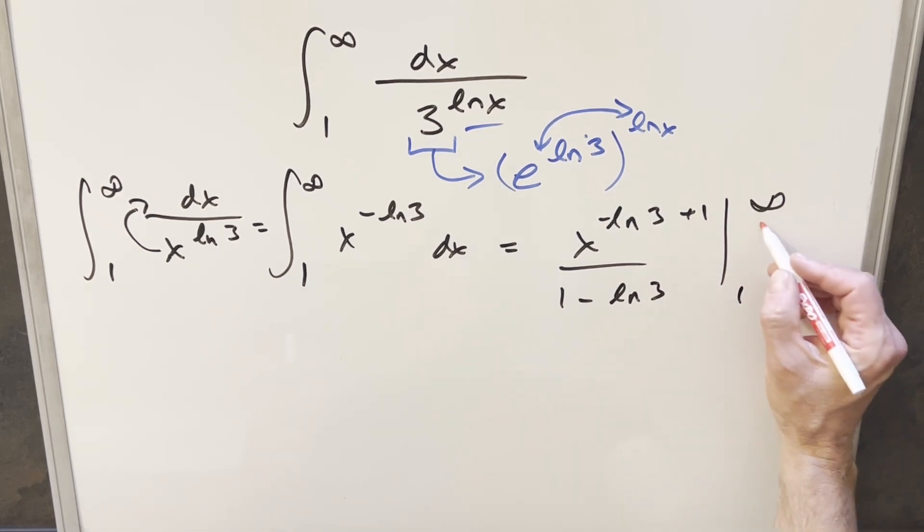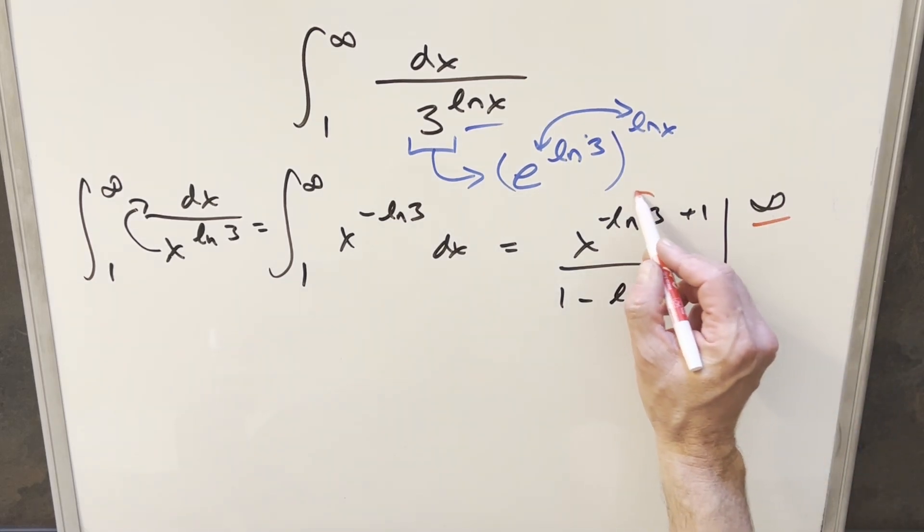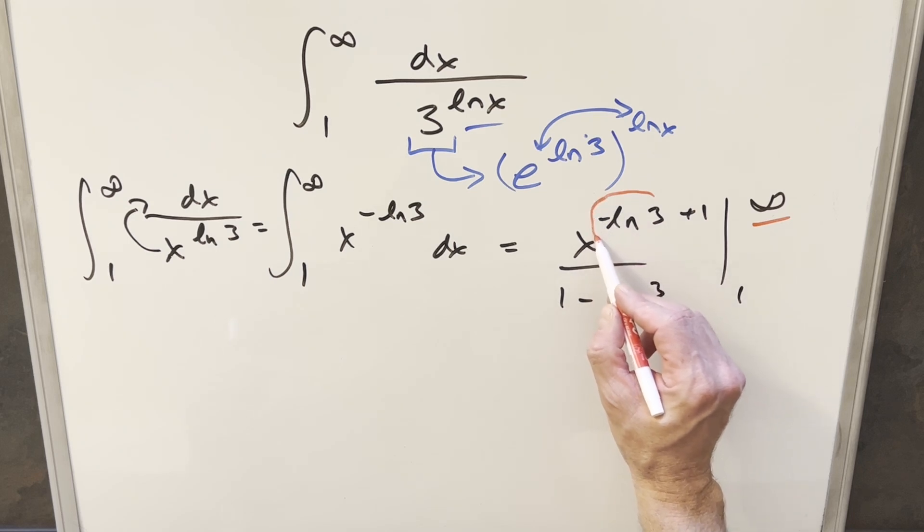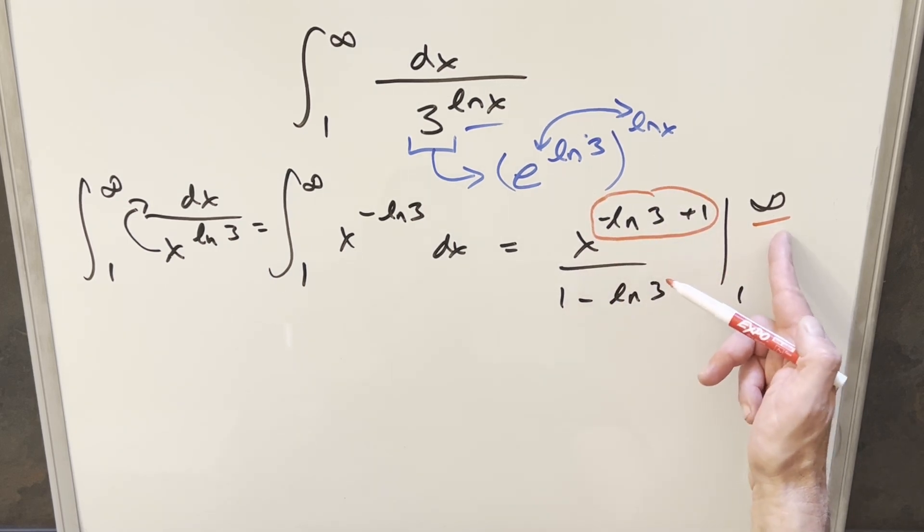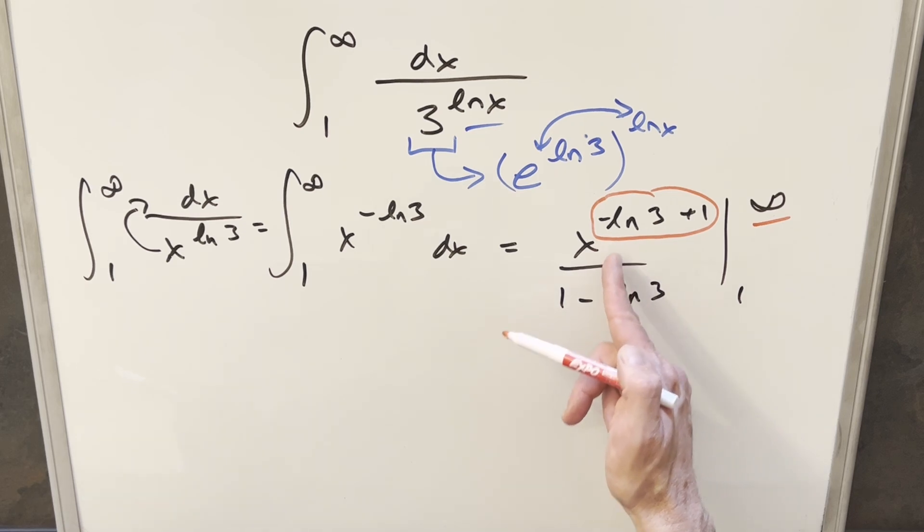And now from here, we just need to evaluate this at infinity. Now what we're looking at here, the key thing here is this exponent. If this exponent is positive and we plug in infinity, then this integral is going to diverge. But if the exponent is negative and we plug in infinity, then it's going to zero. But now the key thing for this exponent, 1 minus ln 3, e is around 2.718 or something like that.